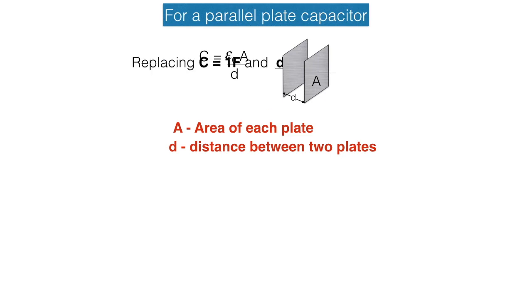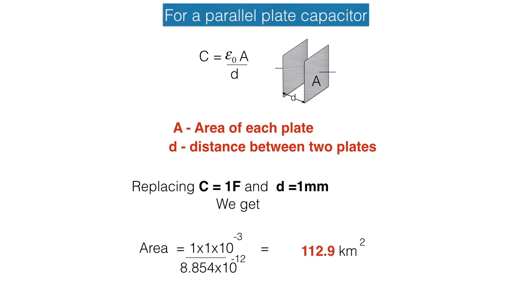For one farad capacitor we will replace C with the value of one farad and the distance we will assume that a distance between two plates would be 1 mm. We will get value of area as 112.9 km squared. It's a huge value.